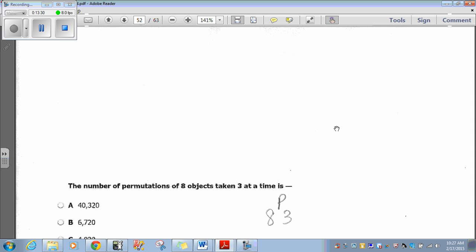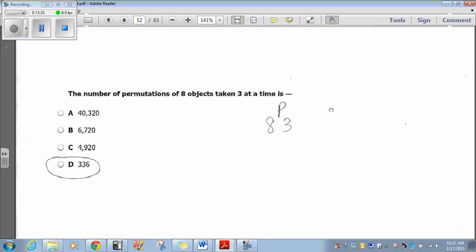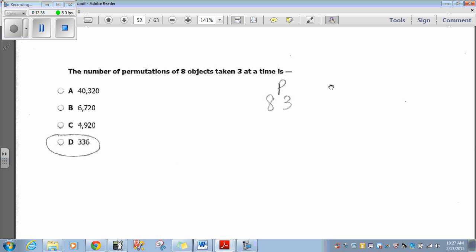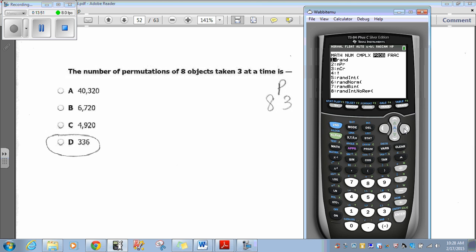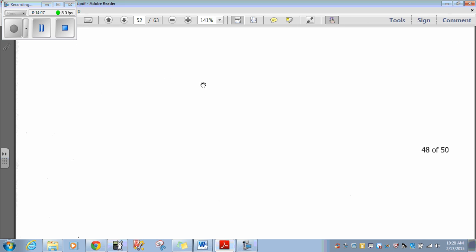Question 48. The number of permutations of 8 objects taken 3 at a time. Well, we just use a permutation. It's 8, permutation 3. Doing this on calculator, I would type the number 8. I would hit math. And then I would go over to probability, and I want a permutation, which is option 2. So, it's 8 objects taken 3 at a time with a permutation, 336, option D.